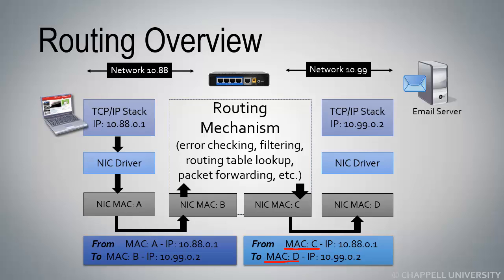After this point, the traffic will be sent to the hardware address of the server on the next network, and it will come up through the stack to IP address 10.99.0.2. During this process, the router also decrements the IP header Time to Live value — or if you are working with IPv6 networks, it would be the hop limit field that changes.